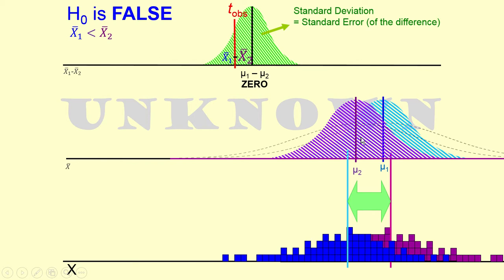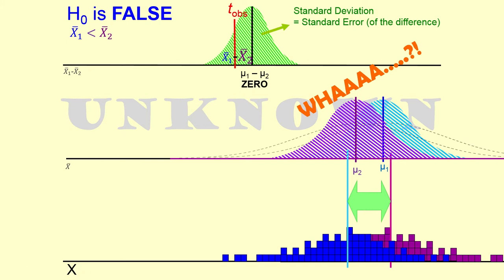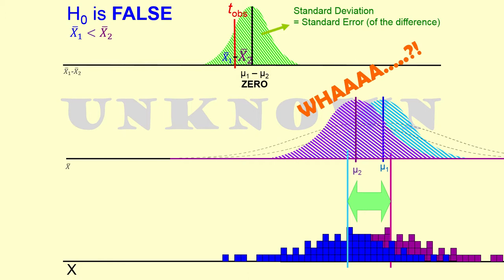Check this out — do you know why this says 'wah'? Because population two is lower than population one, but here sample two is higher than sample one. There's a reversal from the population to the sample. That can happen — that's random sampling for you. Any of these things could be true. It doesn't really matter what is true in the population; anything can be true in the sample. There are things that are more and less likely to be true, but theoretically any crazy thing could happen.